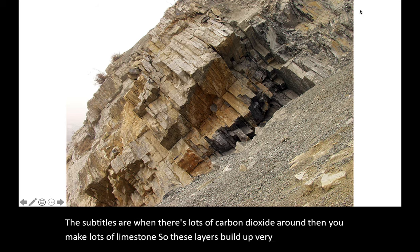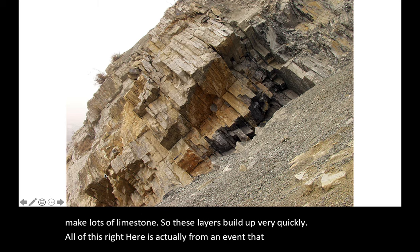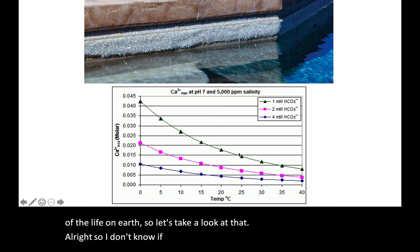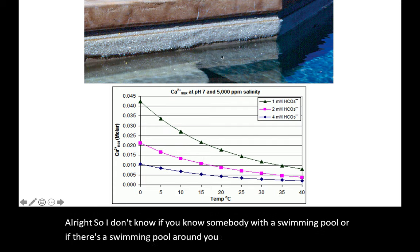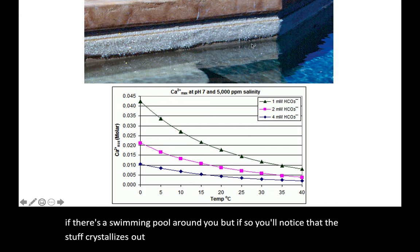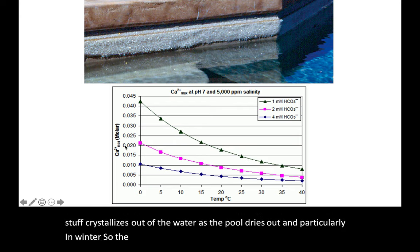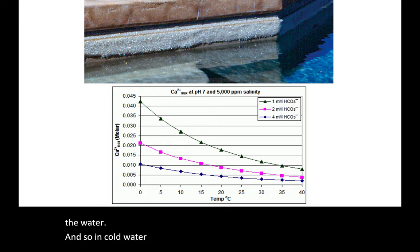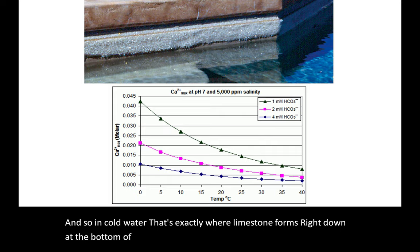All of this right here is actually from an event that nearly wiped out all of the life on Earth. If you know somebody with a swimming pool, you'll notice that stuff crystallizes out of the water as the pool dries out, particularly in winter. The amount of calcium that can soak into the water goes down as the temperature goes down, so it's more likely to drop out. In cold water, that's exactly where limestone forms, right down at the bottom of the ocean.